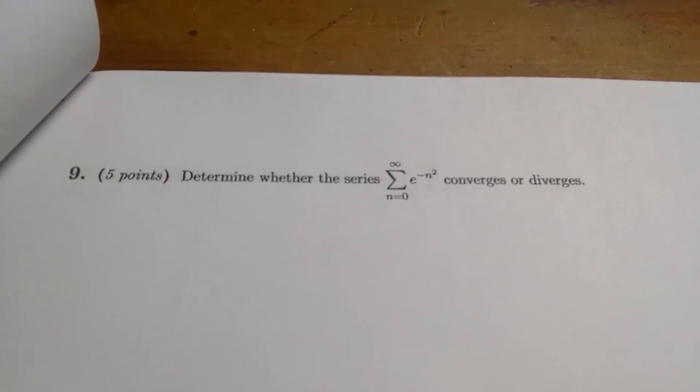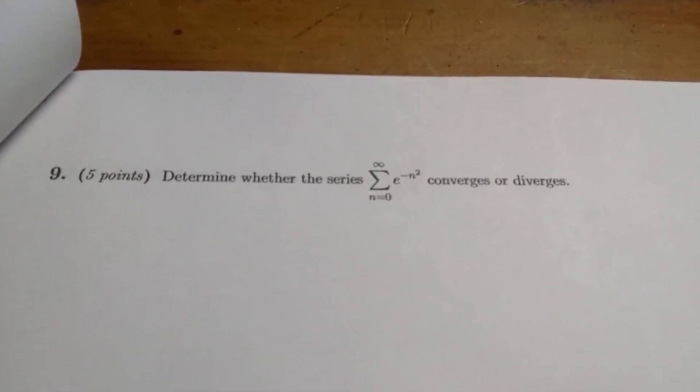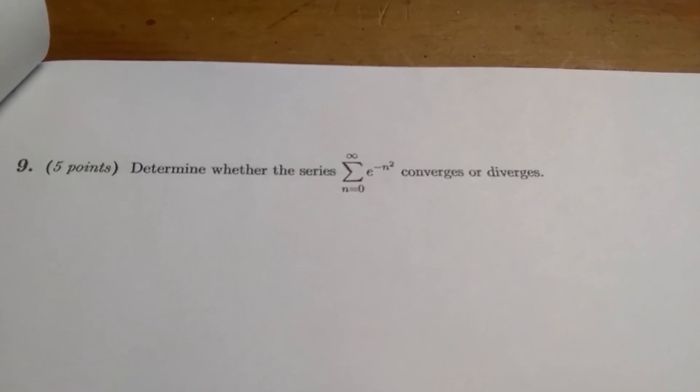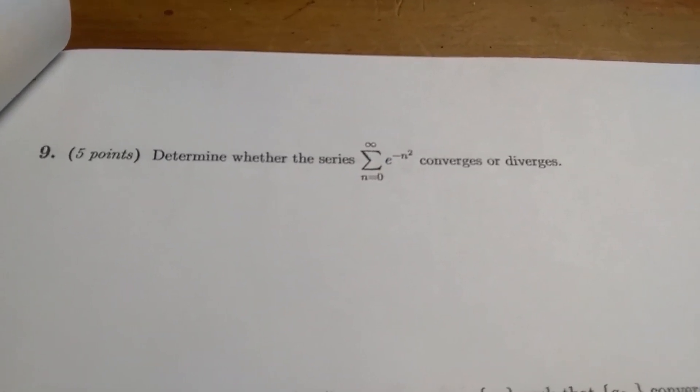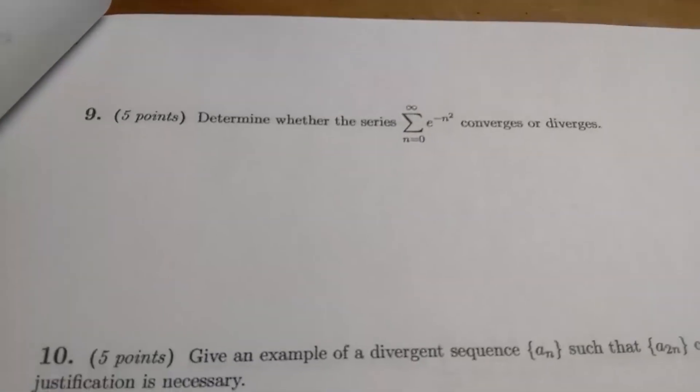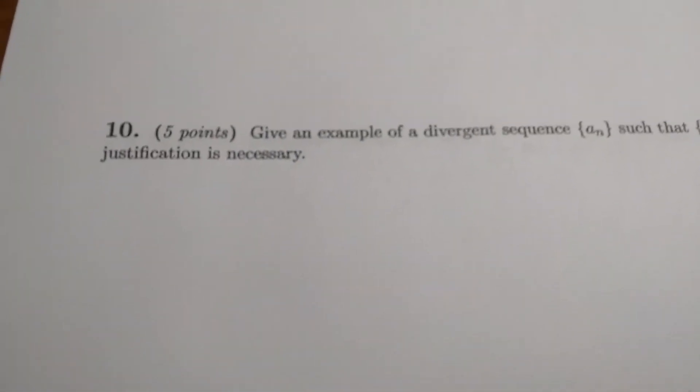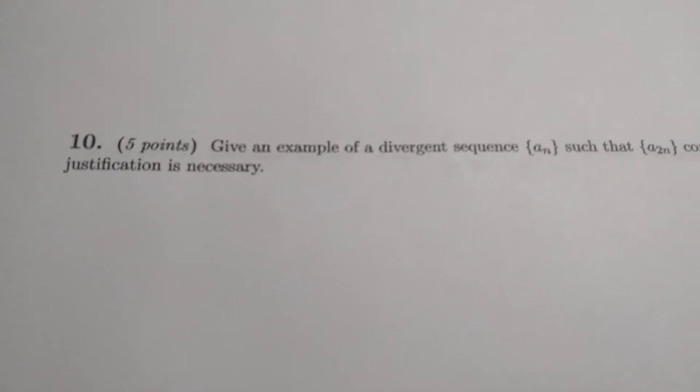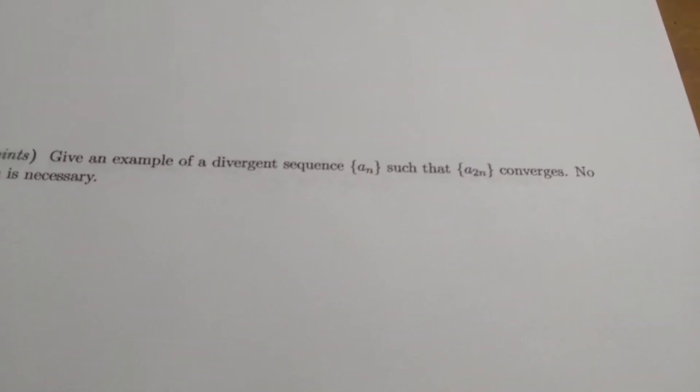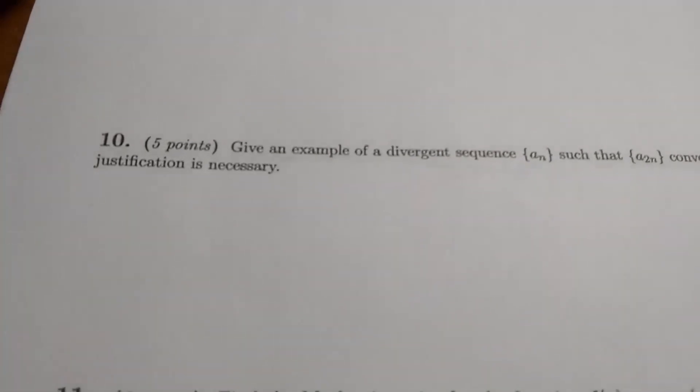Okay, we're now on the fourth page of the test. This is problem number nine. It says determine whether the series converges or diverges. This is not too hard, and there's a couple different ways to do this problem. I remember a lot of the people got really creative with this, and they got the right answer. Number ten, another conceptual question. Give an example of a divergent sequence, a sub n, such that a sub 2n converges. No justification is necessary.